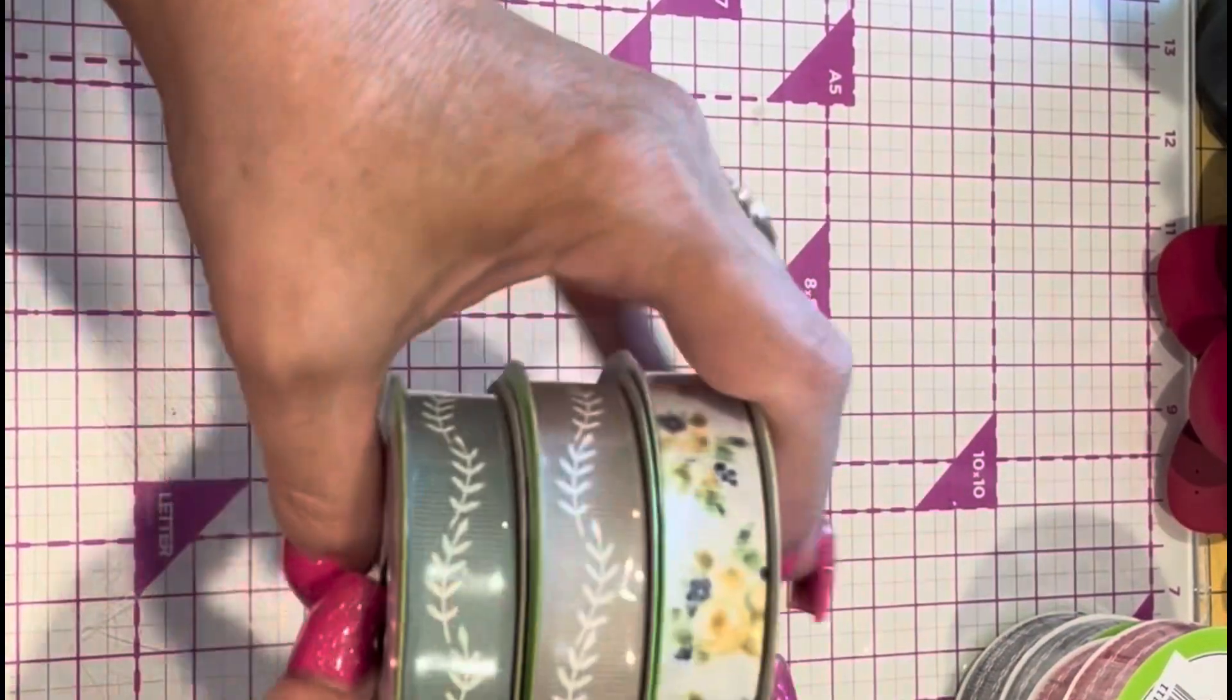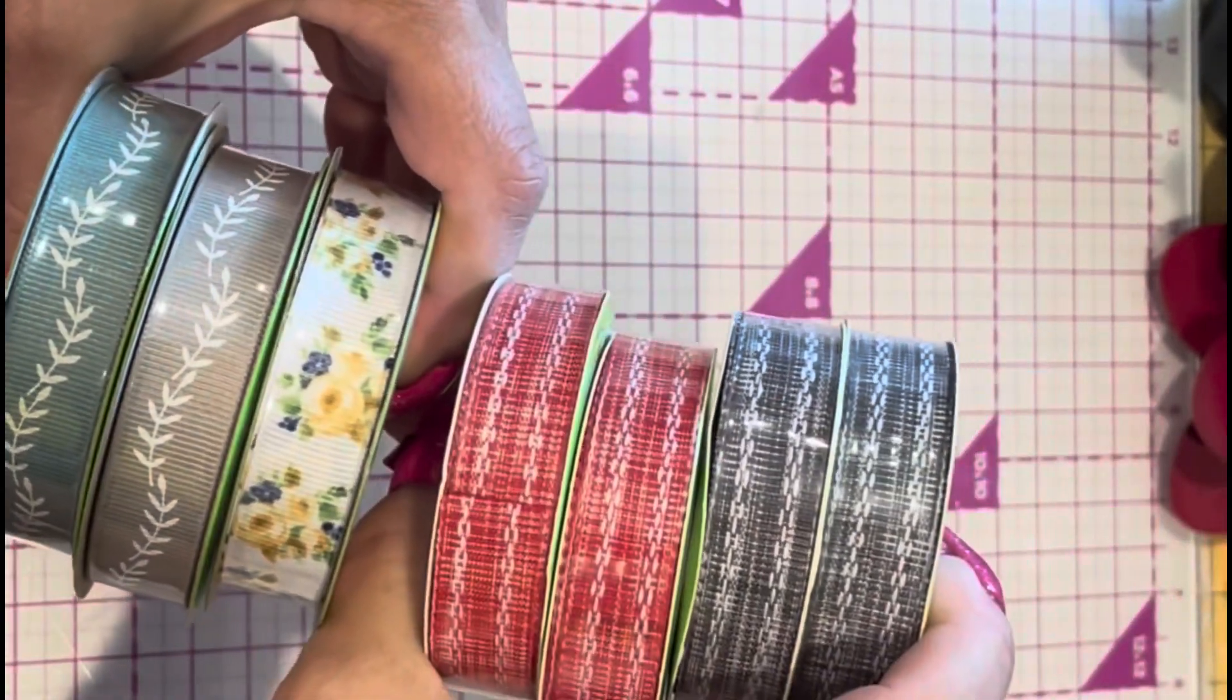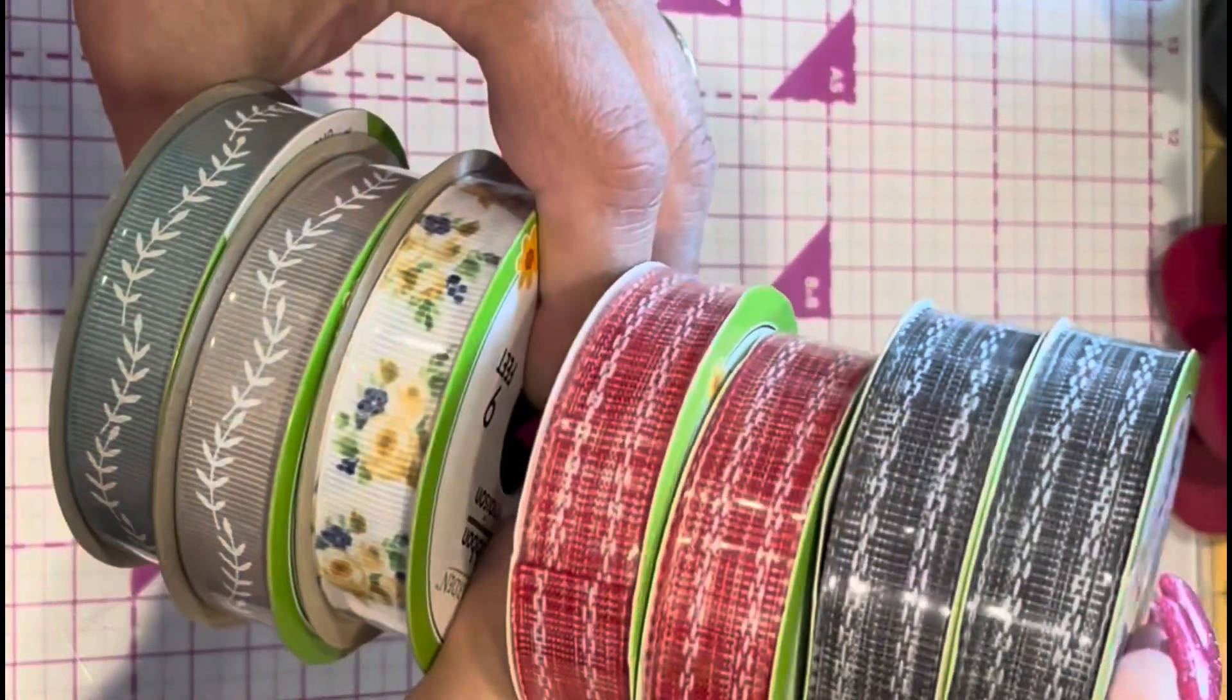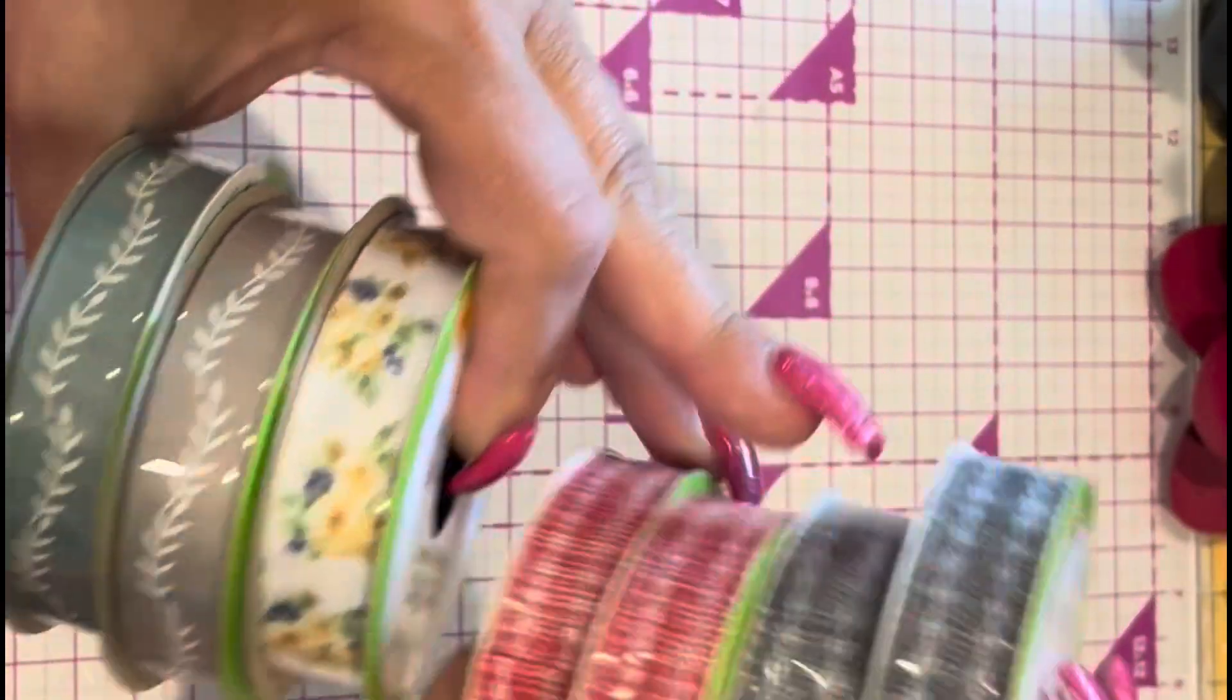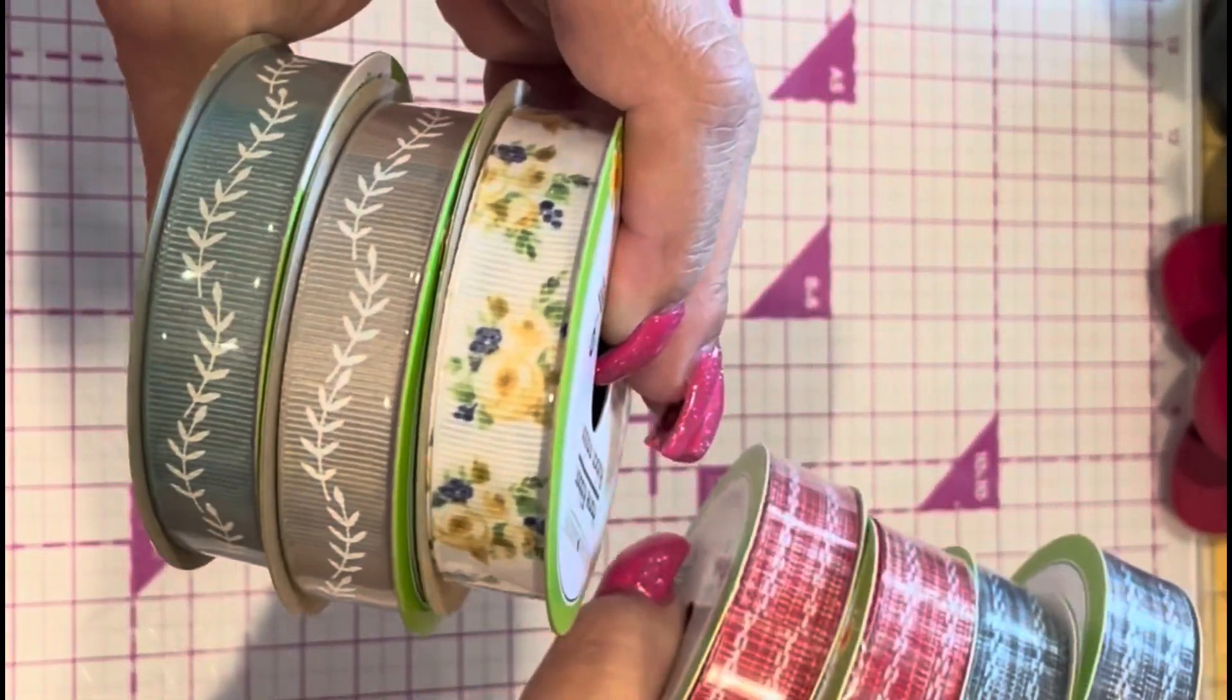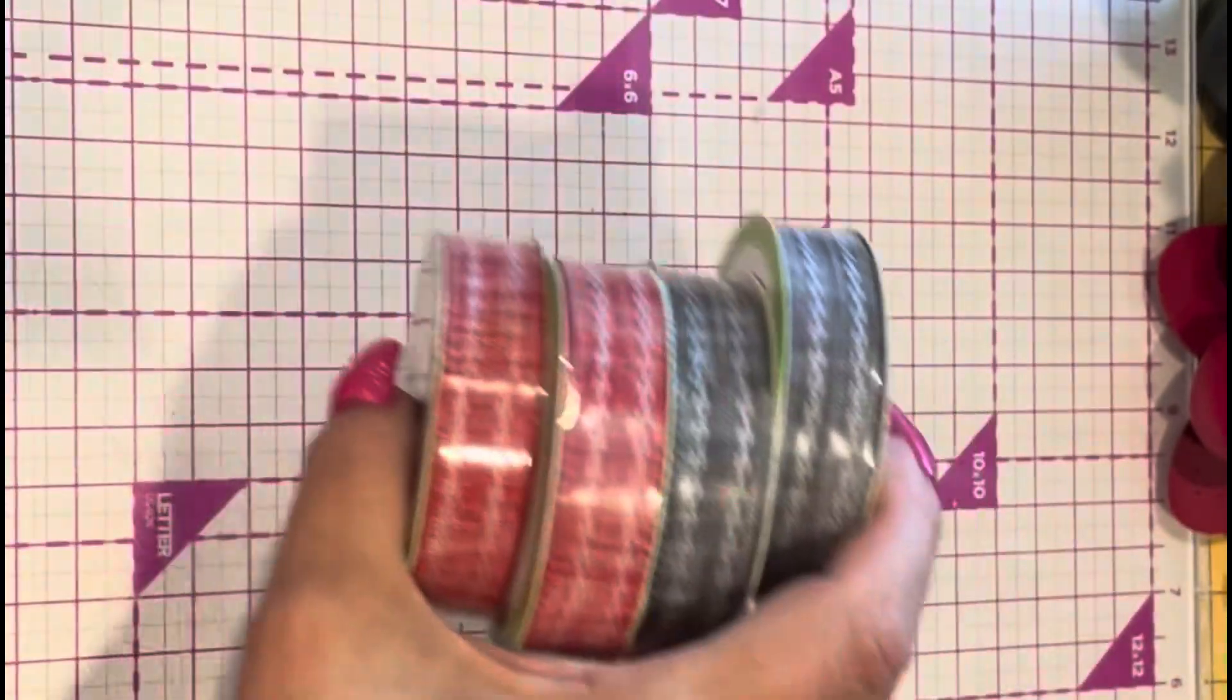First we'll start off with ribbons. These are Dollar Tree ribbons. I didn't get any of the lemon ones, but these are different. I hadn't seen these before. They're three yards. I like these blue ones and red ones. I have a patriotic video coming up on June 4th, so I may use those in there.